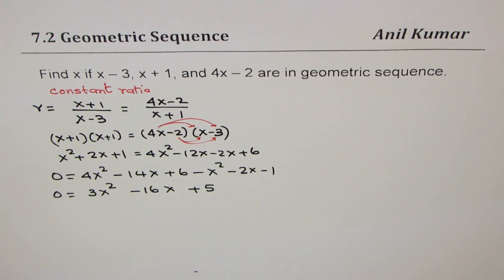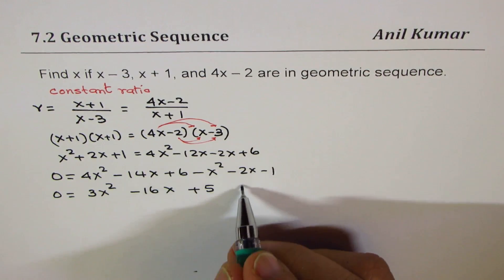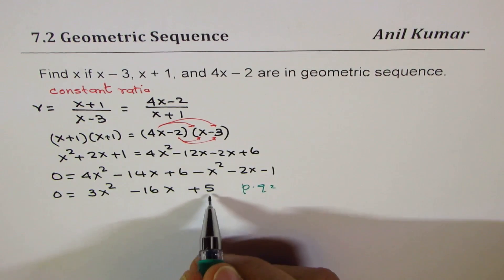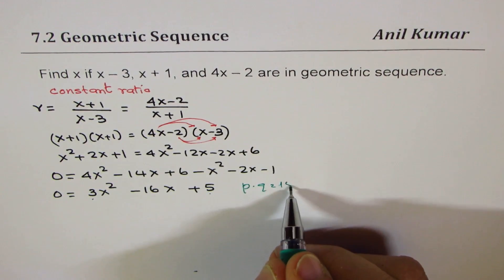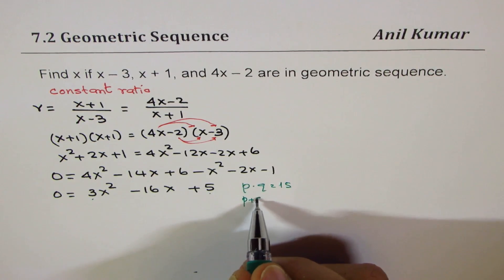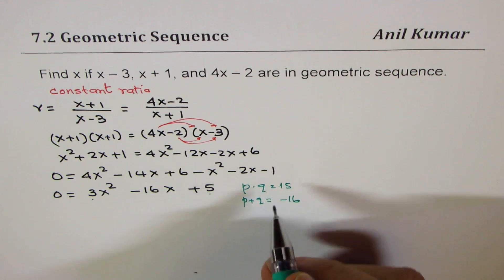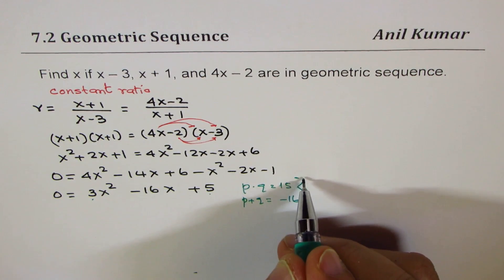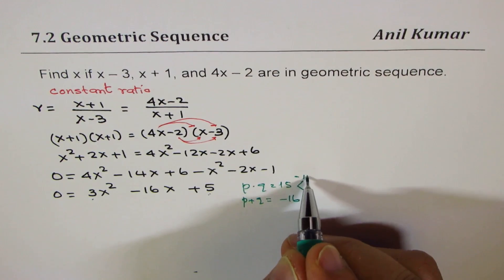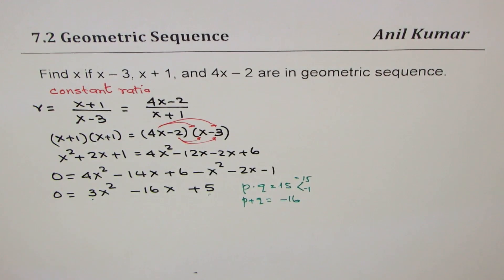Now we're looking for two numbers to factor. Their product should be 5 times 3, which is 15, and their sum should equal -16. The two numbers are both negative since the product is positive: -15 and -1.